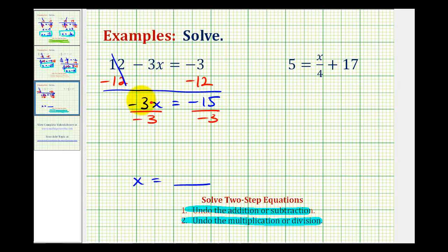So we have one x or x equals negative 15 divided by negative three is equal to positive five. So our solution is x equals five.